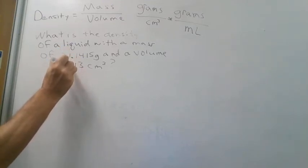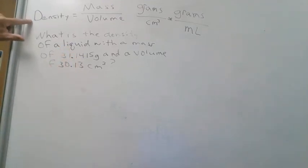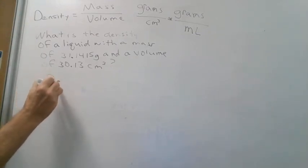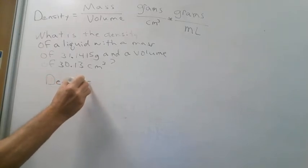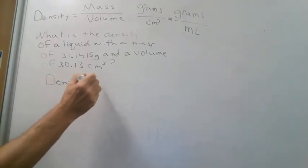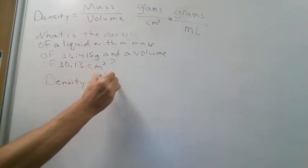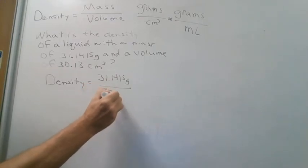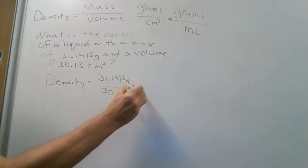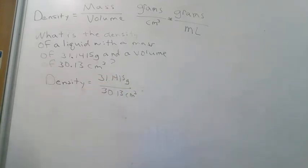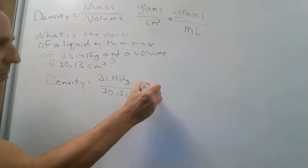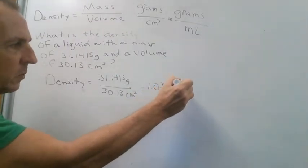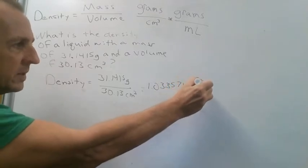For a problem asking for density, we just plug it into the formula. So our density equals our mass, which is 31.1415 grams, divided by the volume of 30.13 cubic centimeters. You plug these numbers into your calculator and you get a number like 1.0335712 grams per cubic centimeter.